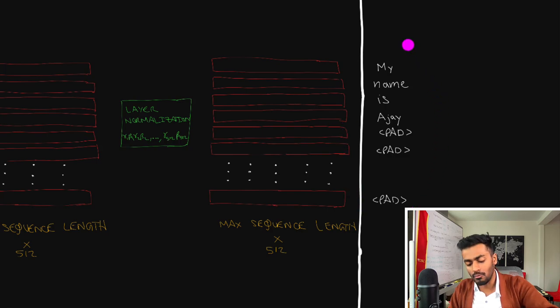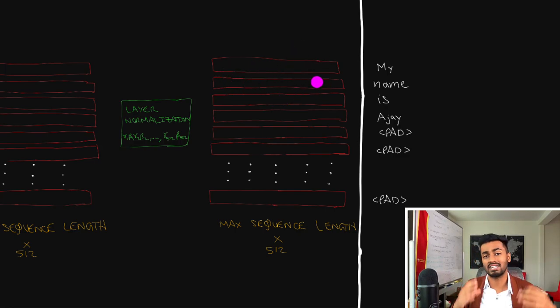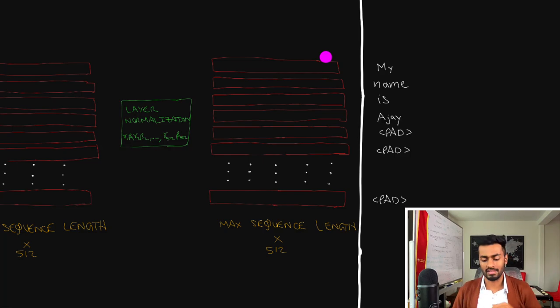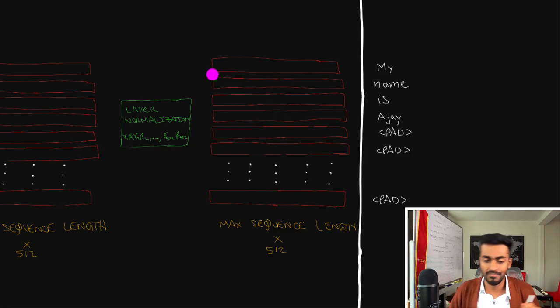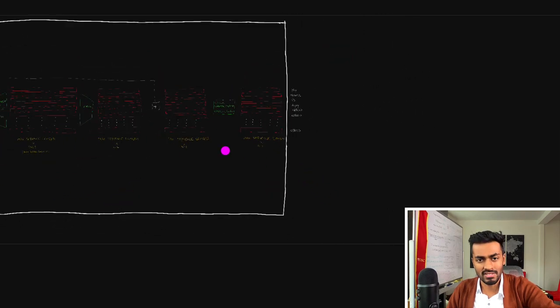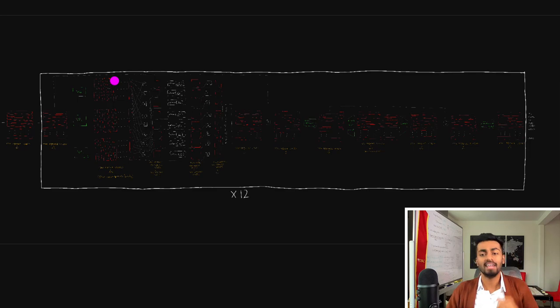These final word vectors now have better contextual awareness because they've passed through the entire network encompassing attention. They also preserve signals via skip connections and have more stable values via layer normalization. Because language is so complex, we execute all of these operations 12 times — cascading one after the other — to get the best possible vector representations of the English words.